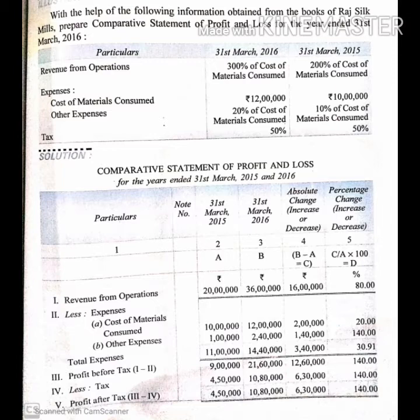The difference in other expenses is Rs. 2 lakhs 40,000 minus Rs. 1 lakh equals Rs. 1 lakh 40,000. For the percentage change, we use the formula C divided by A multiplied by 100, which gives us 140%.